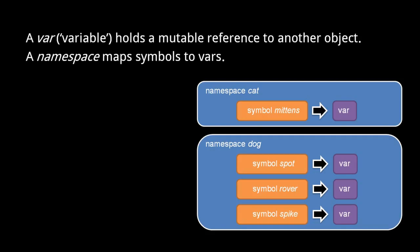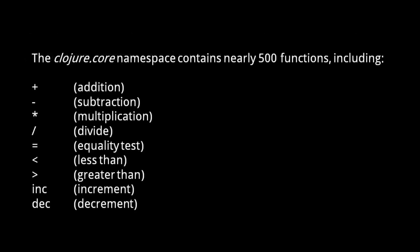Be clear about the chain of lookups: each namespace is known by a symbol name, each namespace maps symbols to vars, and each var itself holds a mutable reference to some other object. The standard library namespace Clojure.core contains nearly 500 functions, including functions for basic operations like arithmetic. For example, the addition function is stored in a var mapped to the symbol plus sign in the Clojure.core namespace. It may seem strange for such functionality to be implemented as functions instead of built-in operators, but the JVM is extremely good at aggressively inlining functions, so most of the time the function call overhead gets optimized away.